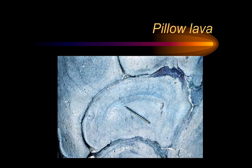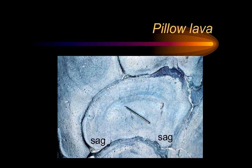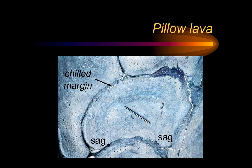Pillow lavas create a very distinctive shape. This is a cross-section of a pillow lava, and it has these distinctive sag features where the pillow has settled down onto the pillow that formed before it. This makes it an extremely good way-up criteria. Around the edge of these pillows we also get a chilled margin, formed by that very rapid cooling that you saw in the video.